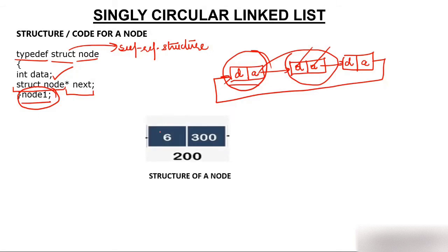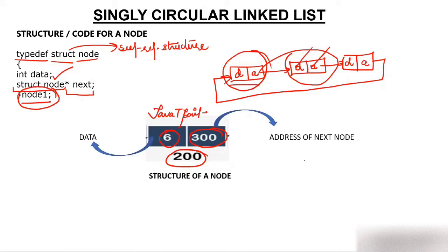If you see the structure of a node, one part is data — data contains 6 — and one is address, the address of the next node. Every structure in memory has an address. Suppose the name of this node is 'javatpoint' and its address is 200. So if someone asks: what is javatpoint — 200; what is the data of javatpoint — 6; what is javatpoint.next — 300. This 6 is data and 300 is the address of the next node.